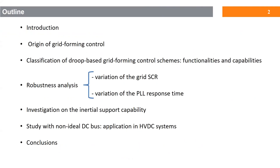As an outline, first I present the introduction of the work, after that I will briefly explain the origin of the grid forming control. Then based on this origin I will define three classes of the grid forming control schemes with different capabilities and functionalities. We have done two sets of studies for these three classes. The first one is robustness analysis where the grid forming control is connected to a constant frequency grid, analyzing the effect of grid impedance and also PLL response time on control performance. The second study is in connection to a variable frequency grid in order to investigate the inertial support of these introduced schemes. In the last part of the paper we have included the dynamics of the DC bus to see how grid forming control affects the DC bus dynamics in an HVDC system. And finally I will conclude the paper.